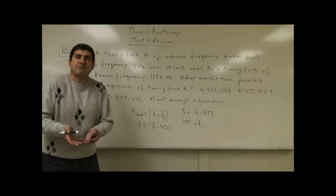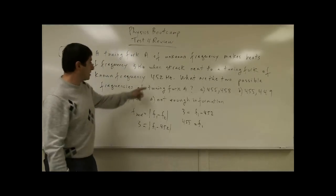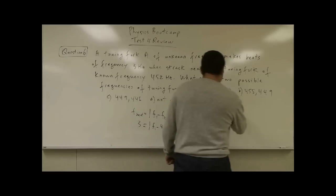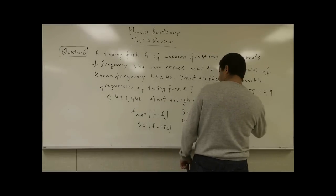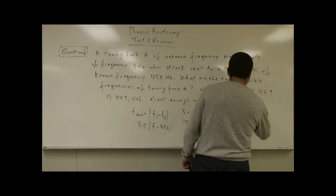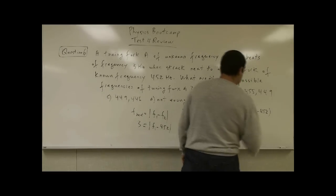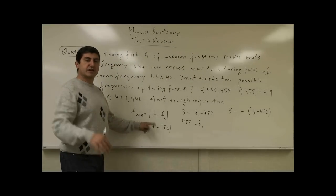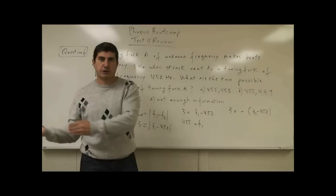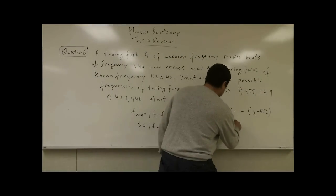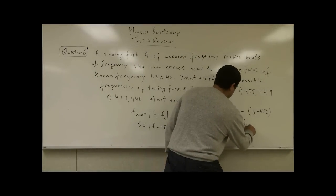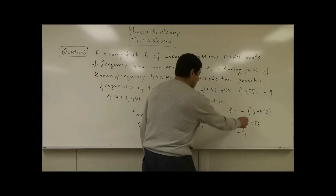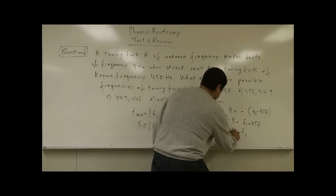Or you could have 3 equals the absolute value of negative f1 minus 452. Since it's absolute value, you can have negative or positive. So that means negative 3 equals f1 minus 452, and then f1 equals 452 minus 3, which is 449.